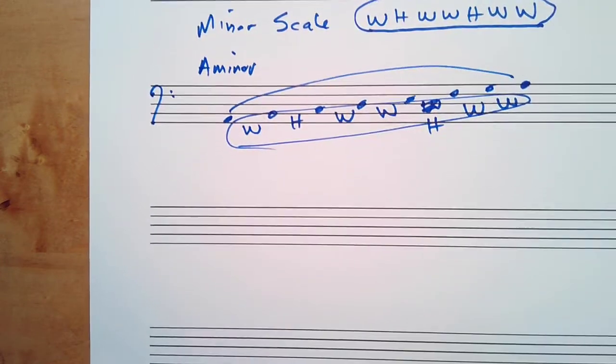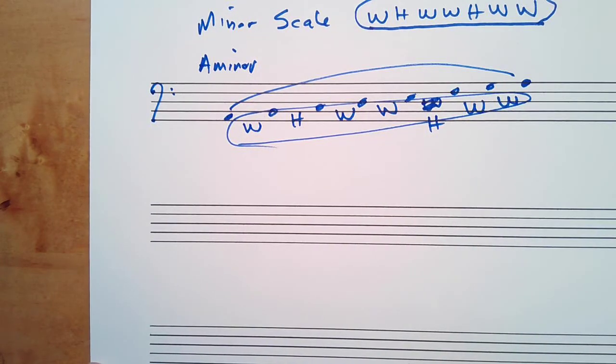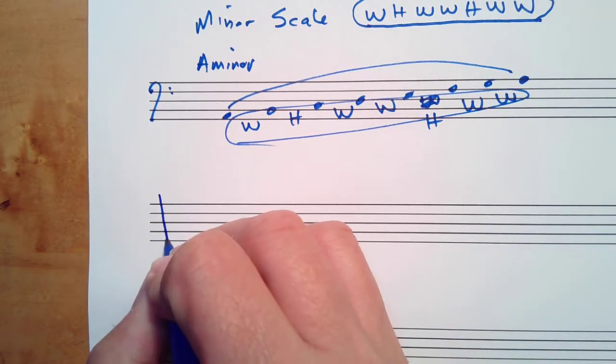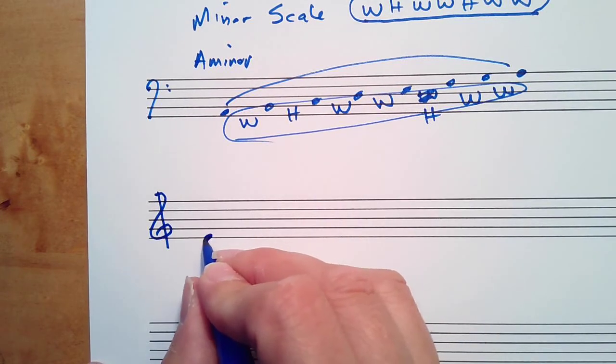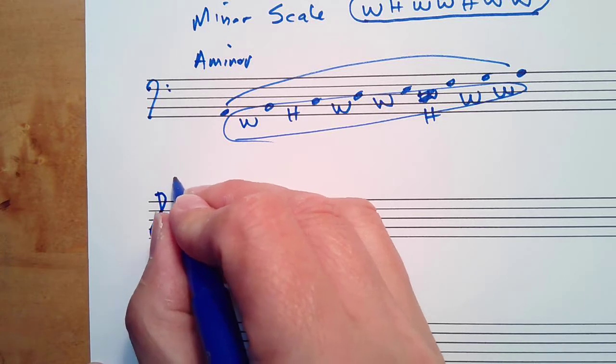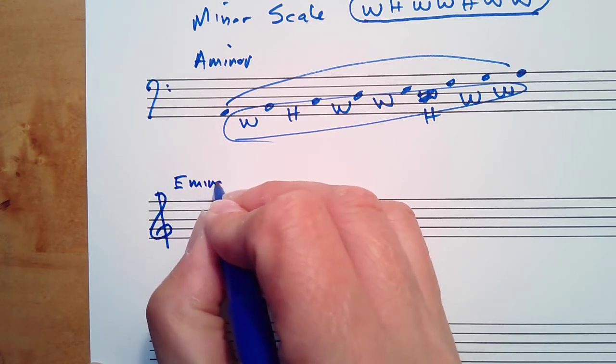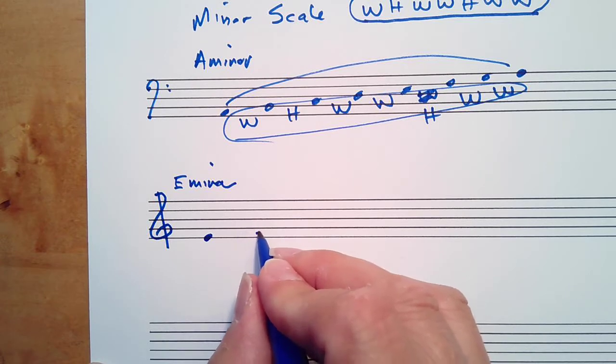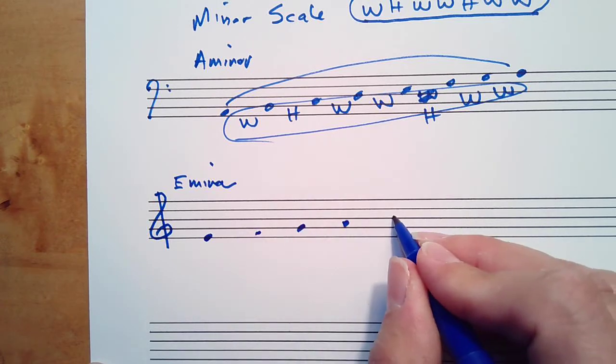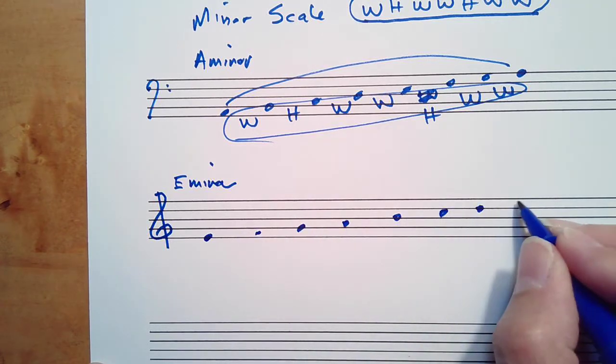We can do the same thing here that we did with a major scale to generate a minor scale. I'll do treble clef. I'm going to start on E, so here I'm looking for E minor. Step number one, write the notes: E, F, G, A, B, C, D, E.